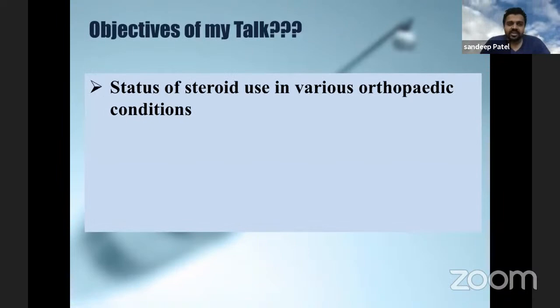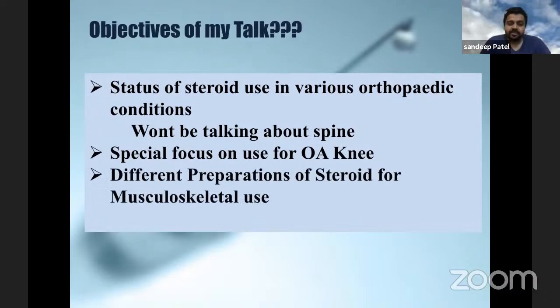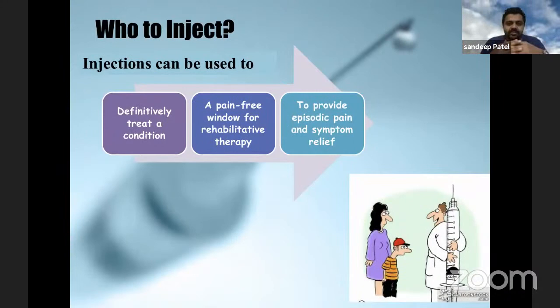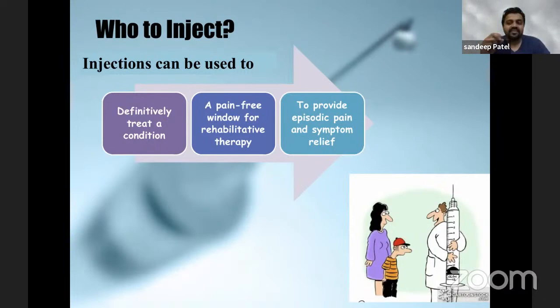So the objectives of my talk are the status of steroid use in various orthopedic conditions. I won't be talking about injections for spine. The special focus will be on the use for osteoarthritis knee, the different preparations of steroid use for musculoskeletal use, and broadly who to inject, how to inject, and which steroid to inject. Corticosteroid injections can be used in three modalities: one is to definitively treat a condition, the second is to provide a pain-free window for rehabilitative therapy, and the third is to provide episodic symptomatic relief for acute flares of any orthopedic condition.